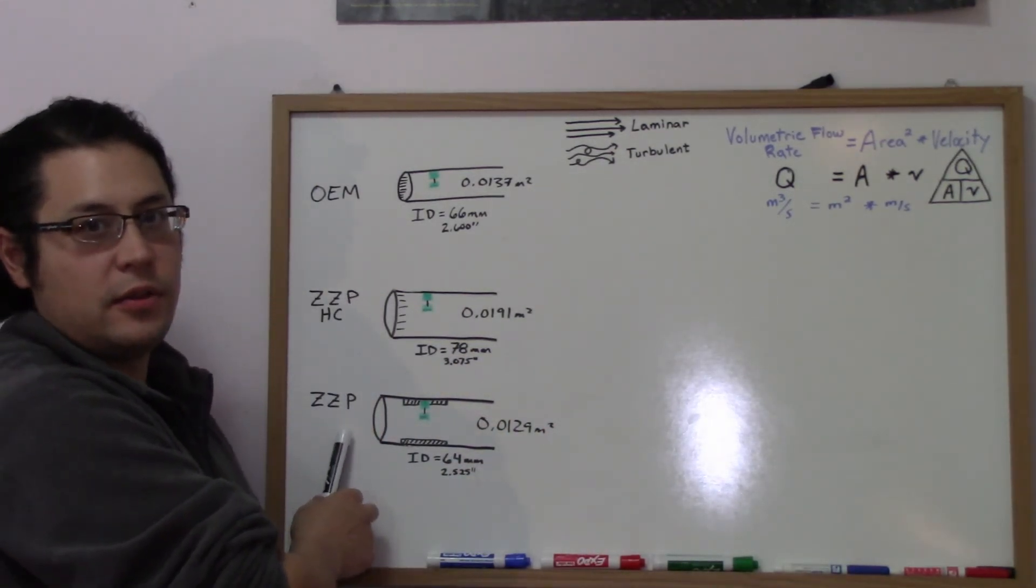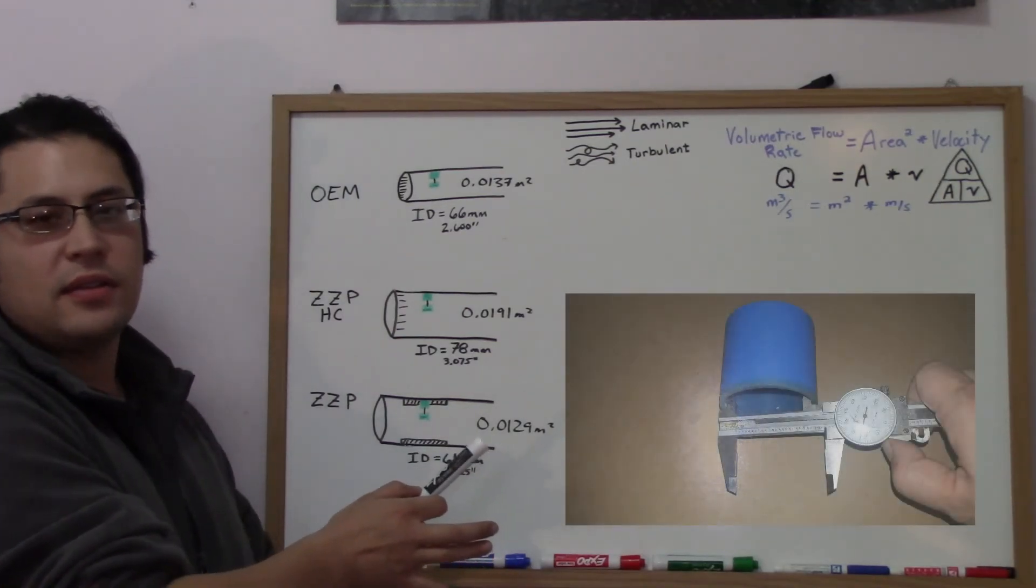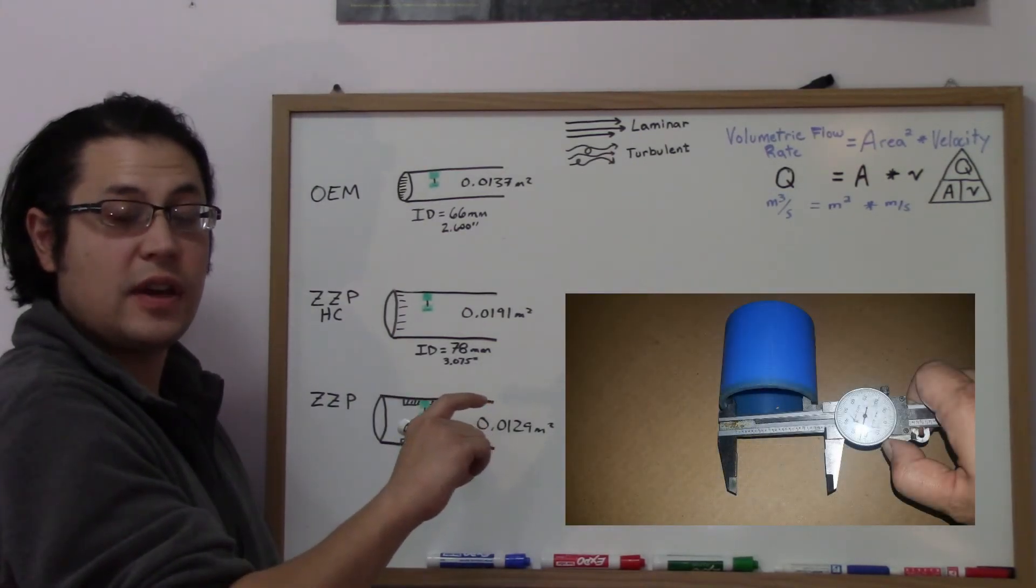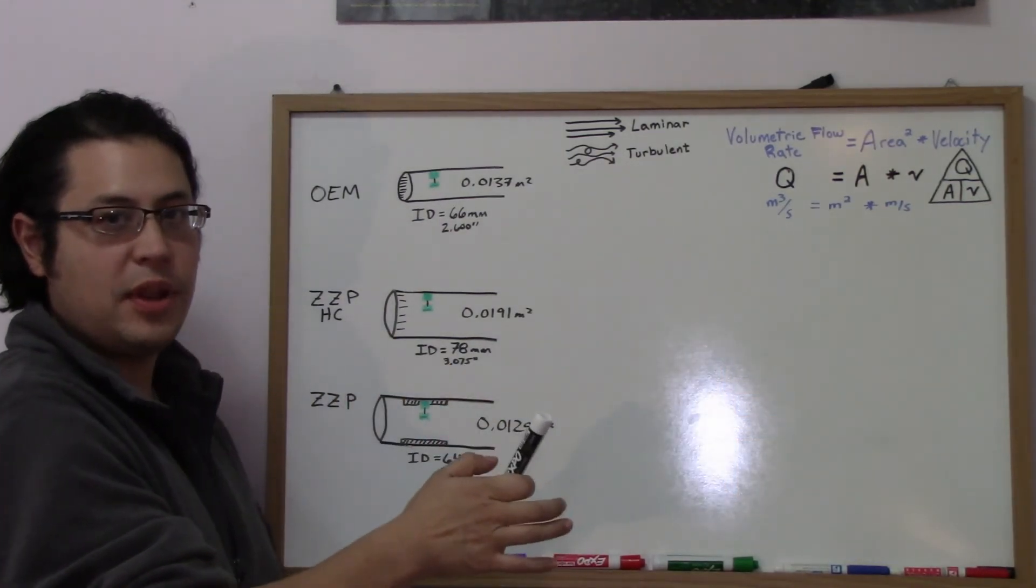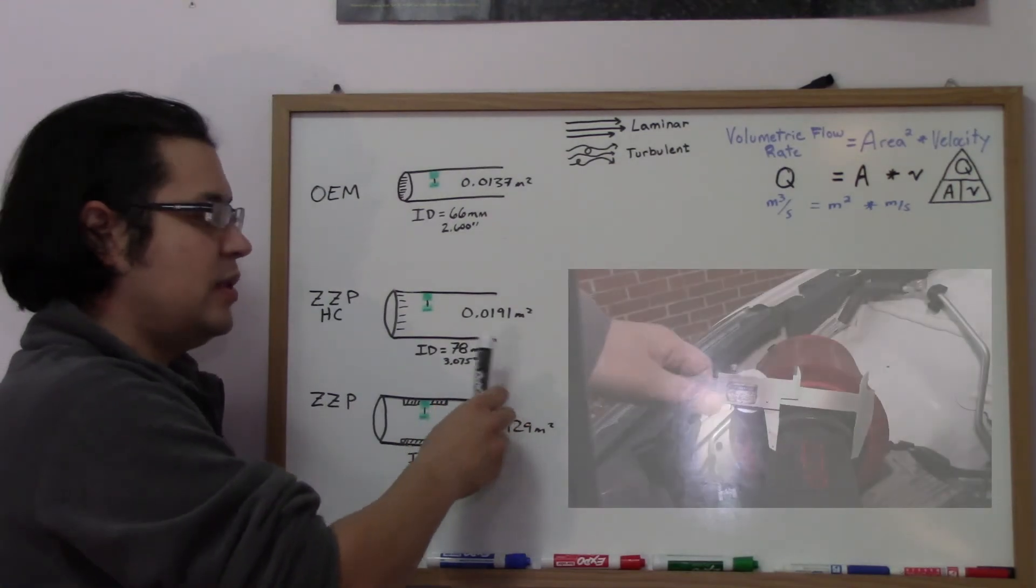The ZZP as you purchase it, they actually put a little plastic insert in there to reduce the effective cross-sectional area, and that's about 64 millimeters. Then I removed that plastic spacer, so I opened it up to about 78 millimeters effective area.